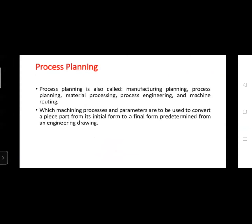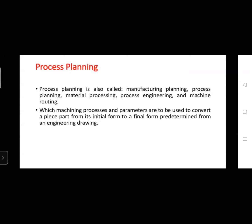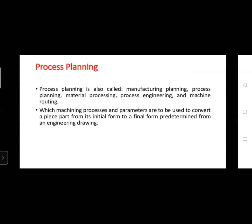Now we come to process planning. Process planning is also called manufacturing planning, material processing, process engineering, and machine building — these are different names for process planning. By 'process,' we understand it is a procedure: which machining process and parameters are to be used to convert a part from its initial form to a final form, as predetermined from an engineering drawing.